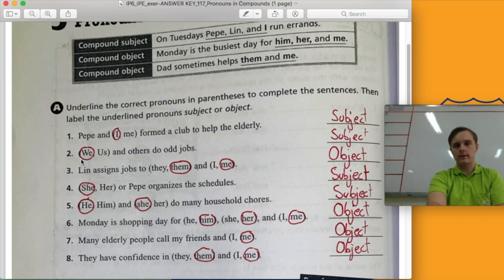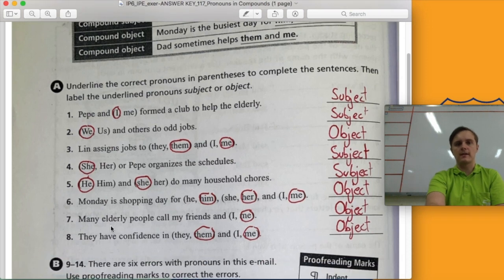Number one, Pepe and I formed a club to help the elderly. I is subject pronoun. Number two, we and others do odd jobs. We is a subject pronoun. Number three, Lynn assigns jobs to them and me. Them and me are both object pronouns. Number four, she or Pepe organizes the schedules. She is a subject pronoun. Number five, he and she do many household chores. They are both subject pronouns. Number six, Monday is shopping day for him, her and me. We use the object pronouns after the word for. Number seven, many elderly people call my friends and me. We use me after the verb call and that is an object pronoun. And number eight, they have confidence in them and me. Them and me again are object pronouns. So give yourself a score out of eight for section A, please.